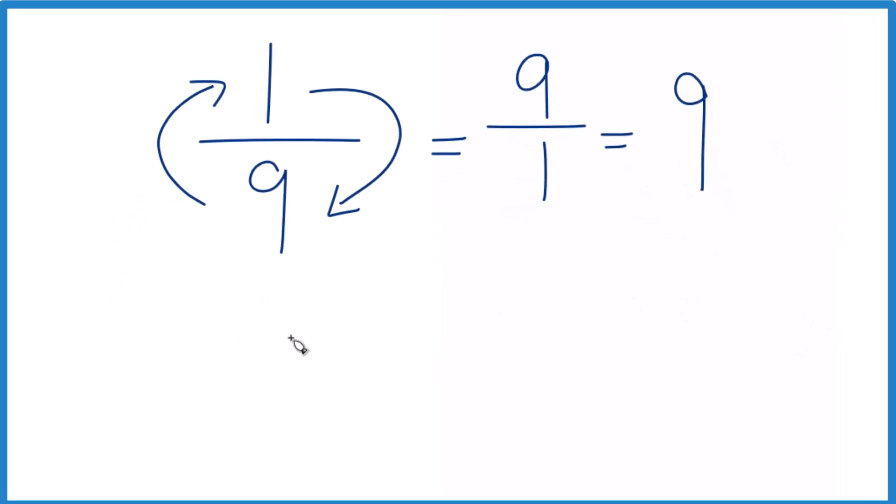And you can check that. You could take one-ninth and multiply it by its reciprocal. Let's multiply it by nine over one. If we did it right, we end up with one as our answer.